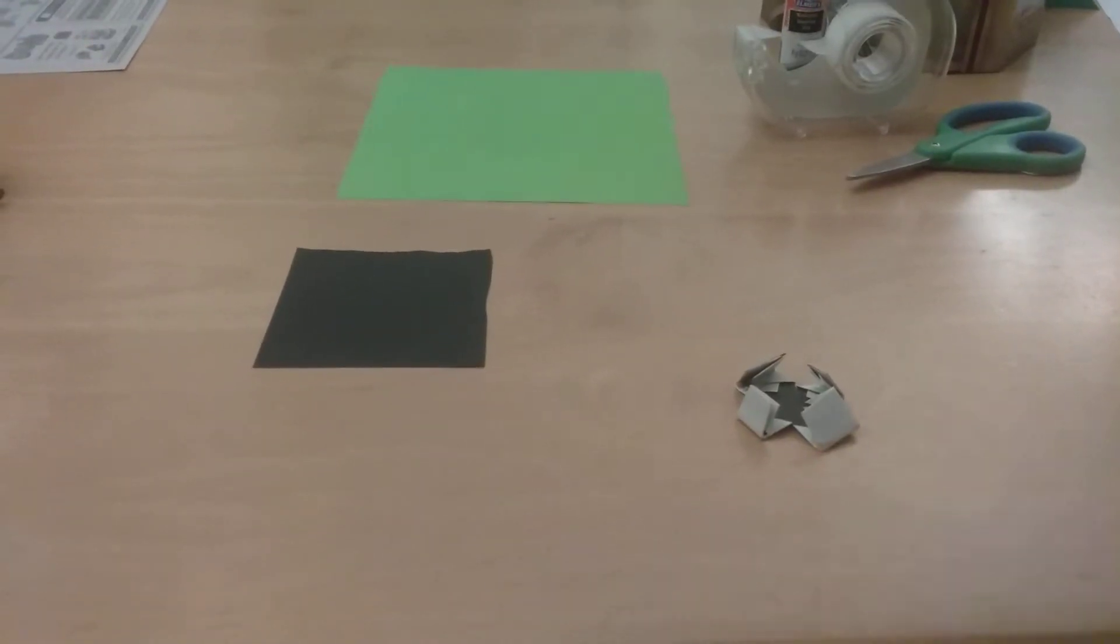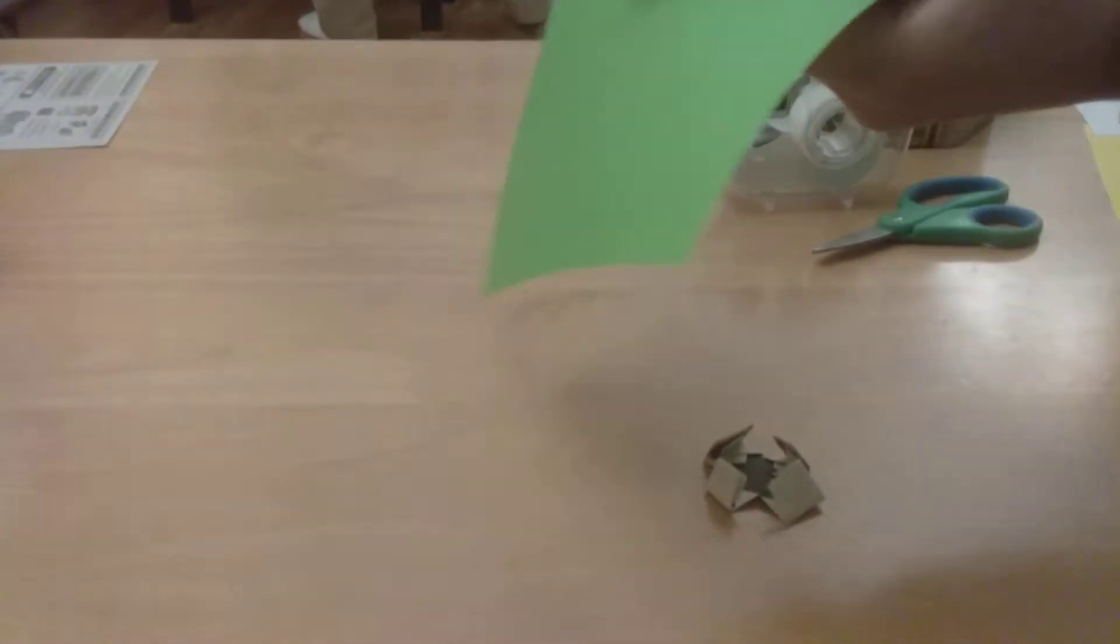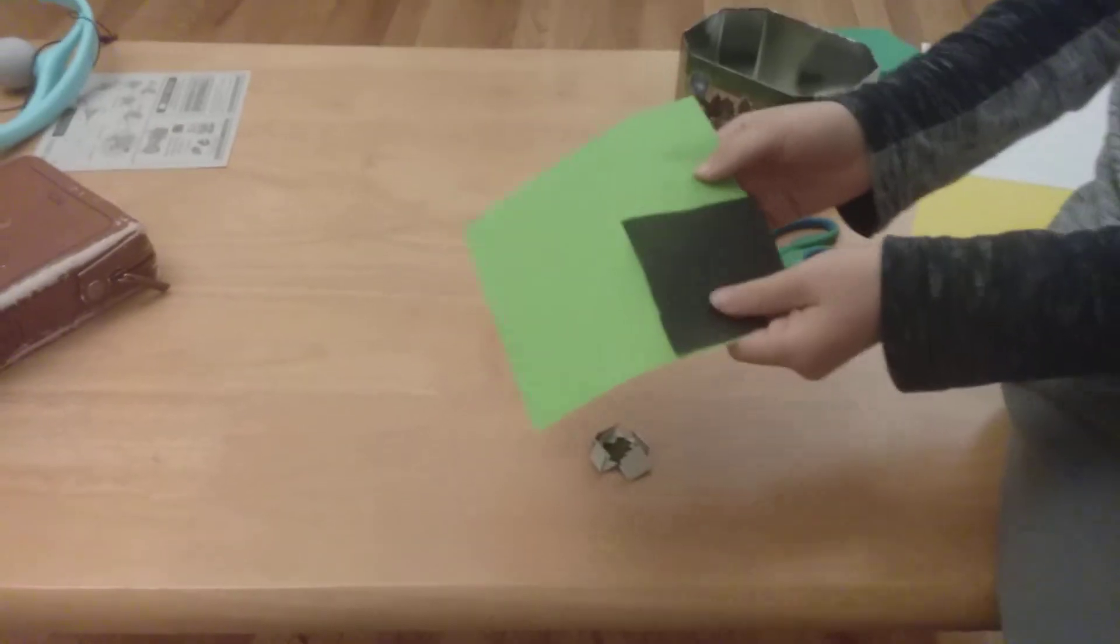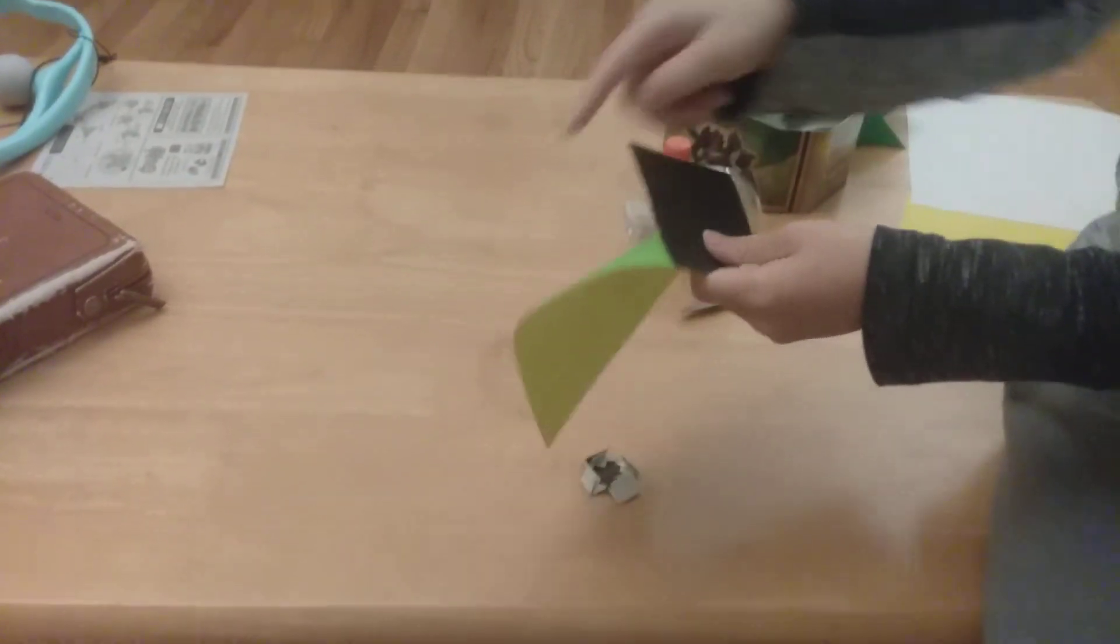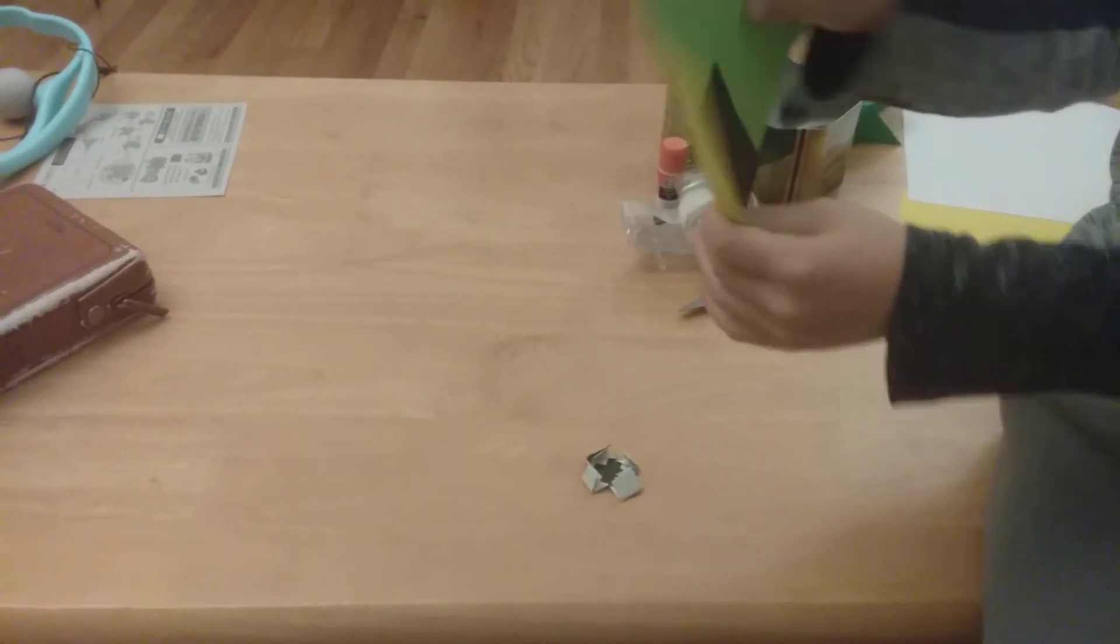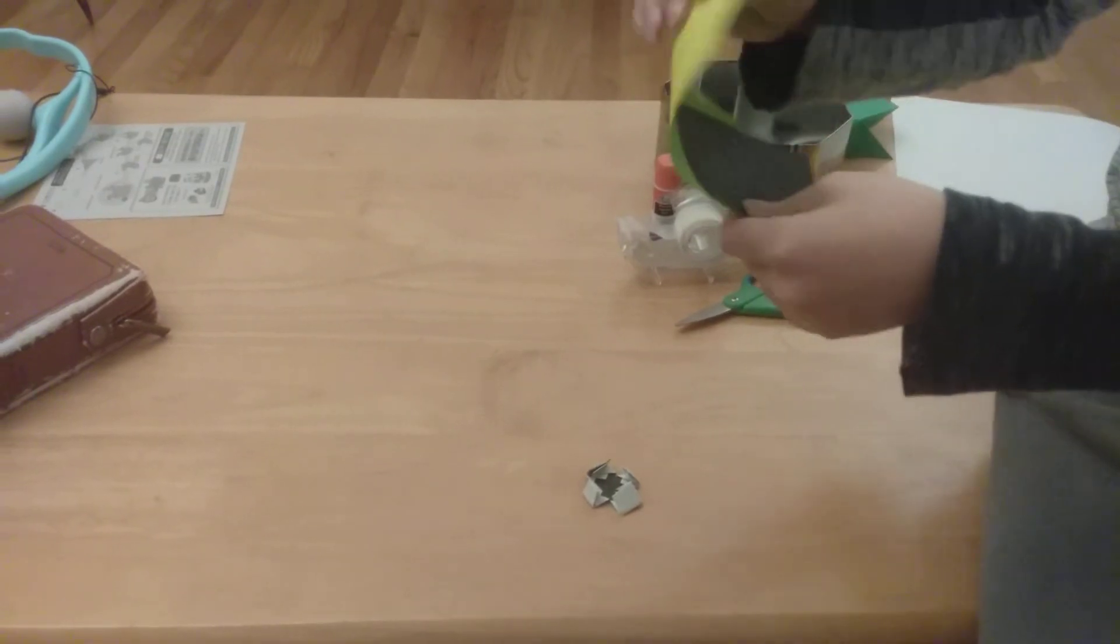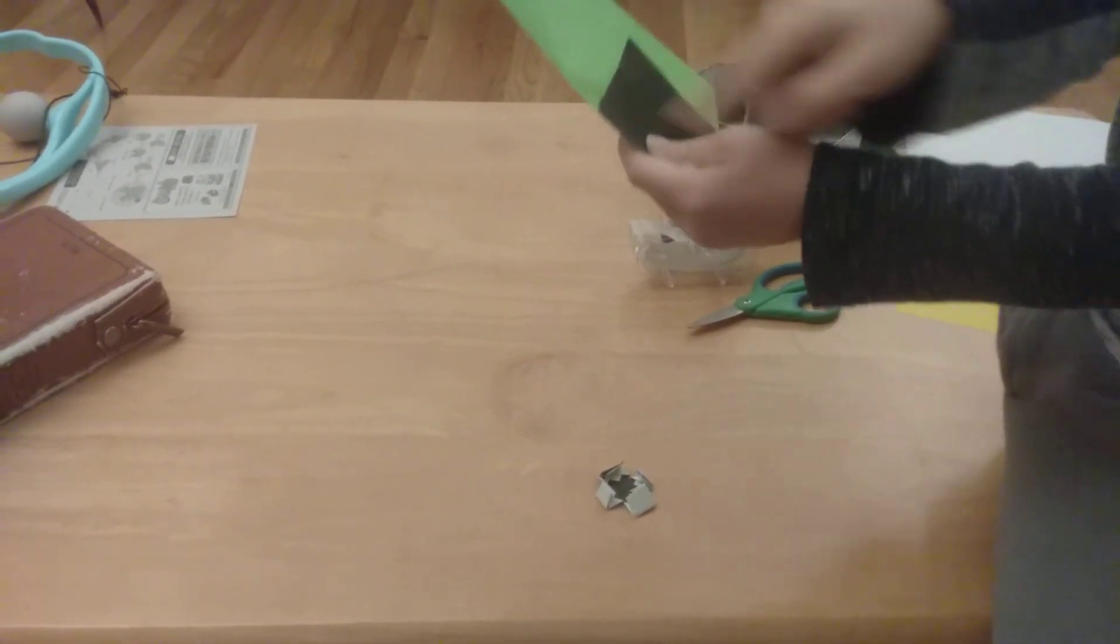So first you'll need a black piece of paper, white on the back, and then with this black one-fourth of it by folding like that and then again and then like that and then cutting out one.